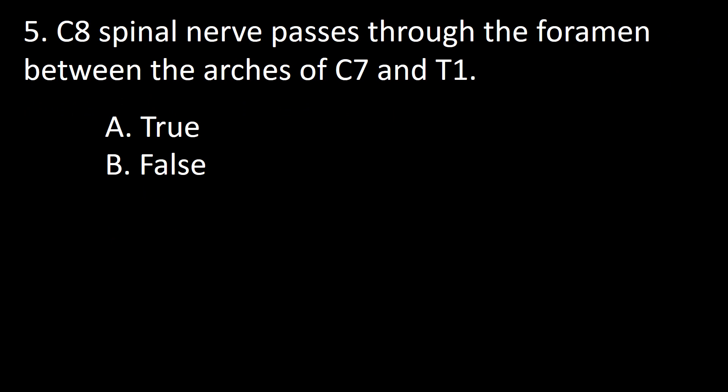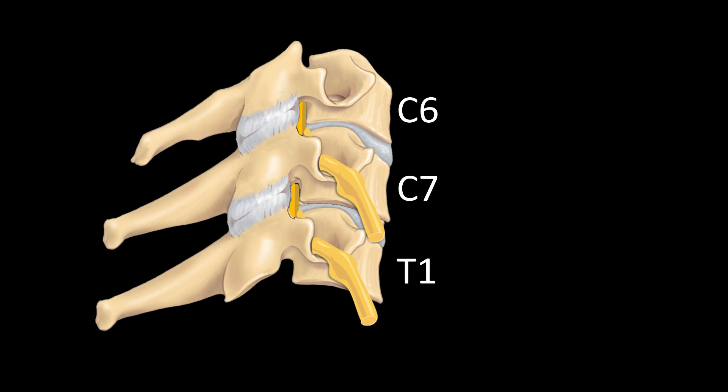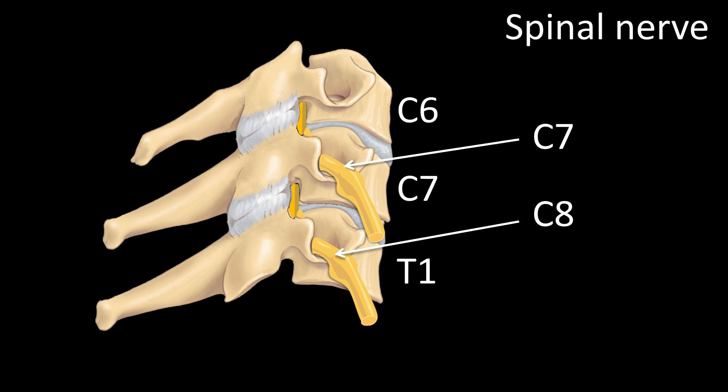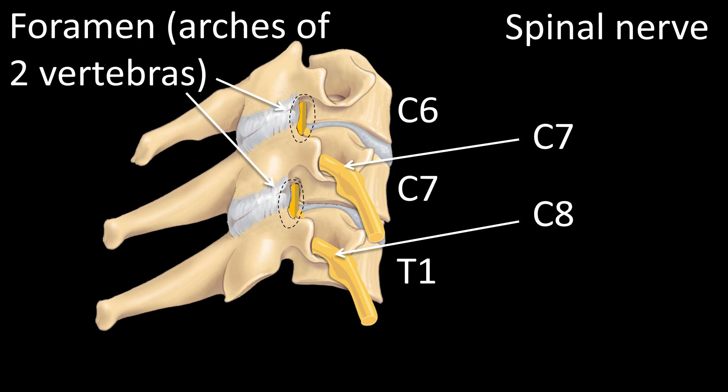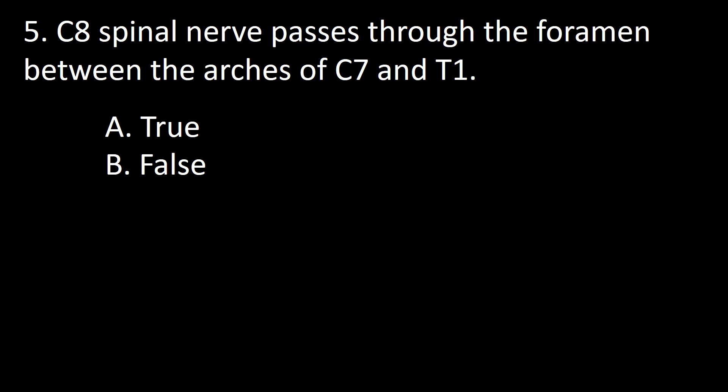Next question: C8 spinal nerve passes through the foramen between the arches of C7 and T1 — true or false? There is no C8 vertebral body. The 7th and 8th cervical spinal nerves emerge through the intervertebral foramen, and C8 spinal nerve exits the spinal canal between the arches of C7 and T1. So the answer to this question is true.